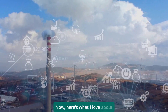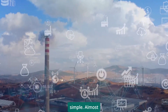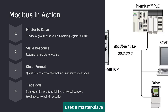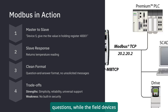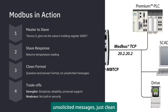Now here's what I love about Modbus — it's simple. Almost stupidly simple. It uses a master-slave architecture, which means one device, your SCADA system, acts as the master and asks questions, while the field devices act as slaves and respond when asked. No chatty devices, no unsolicited messages, just clean question and answer communication.